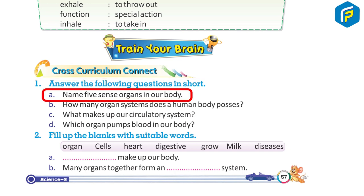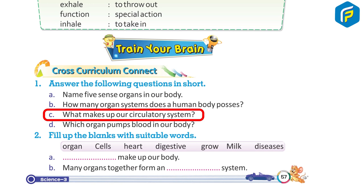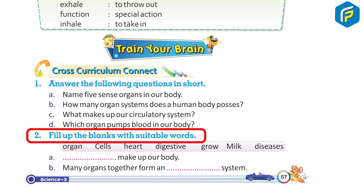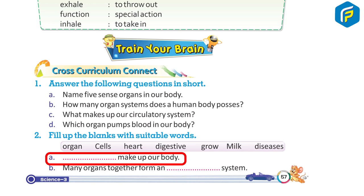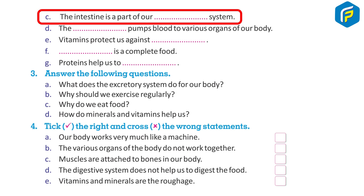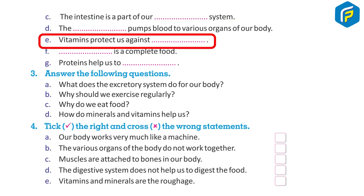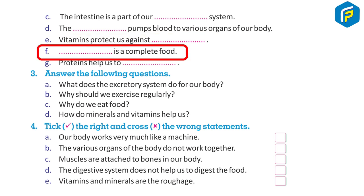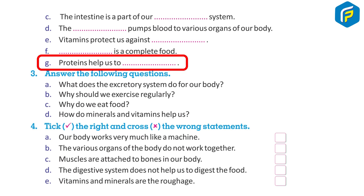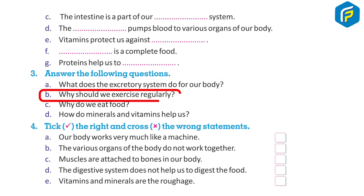Train your brain — answer the following questions: Name the five sense organs. How many organ systems does a human body possess? What makes up the circulatory system? Which organ pumps blood? Fill in the blanks: what makes up our body, what forms an organ system, which system includes the intestine, which organ pumps blood, what vitamins protect us against, and what food is a complete food.